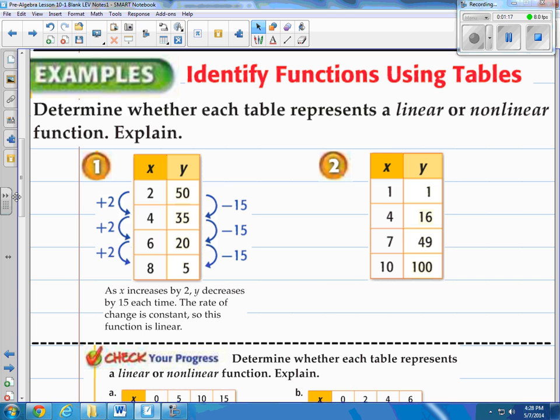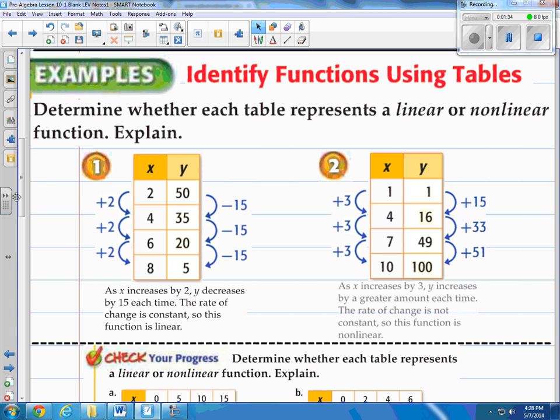Let's look at number 2. You can see in the X column 1, 4, 7, 10, that's going up by 3. In the Y column I notice that it's going up at different intervals: 15, then 33, then 51. We would say as X increases by 3, Y increases by a greater amount each time. The rate of change is not constant, meaning it's not the same. So this function is nonlinear.